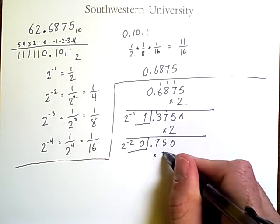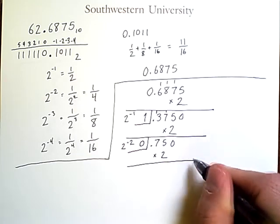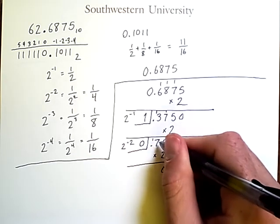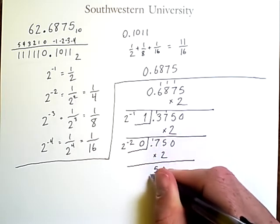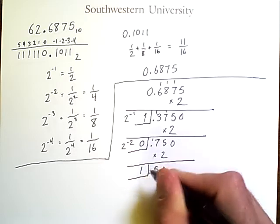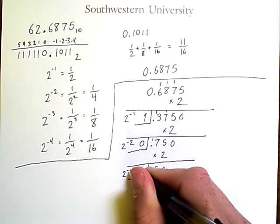We'll continue multiplying by 2. 2 times 5 is 10 again. 2 times 7 is 14, plus 1 is 15. Here we have a 1, which we'll keep separate. This corresponds to 2 to the negative 3.